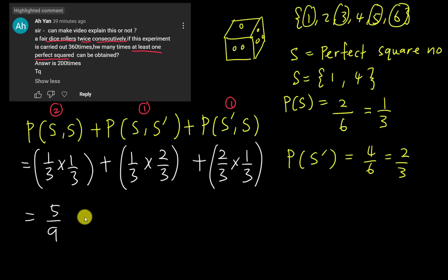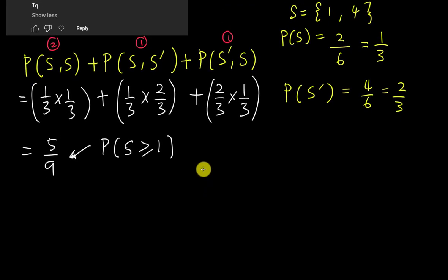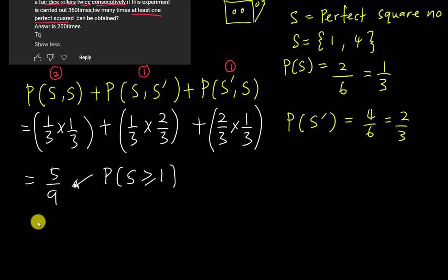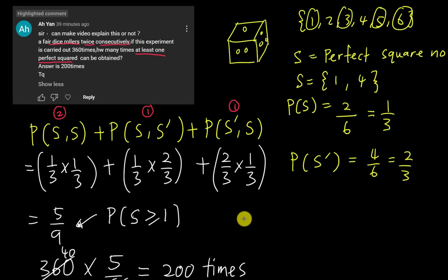So what is the probability 5 over 9 here means? This is the probability to get at least one perfect square number. Okay, but because here they only carry out two, basically is at least one and two. Okay, now because this experiment actually they carry out like 360 times, right? So therefore I will just need to use 360 multiply the 5 over 9 and I simplify this one. I get 40. 40 times 5 is 200. So based on this experiment, I expect I should on average get 200 times which I will get at least one perfect square number from the dice experiment.